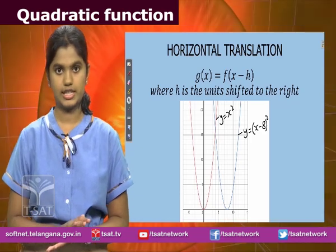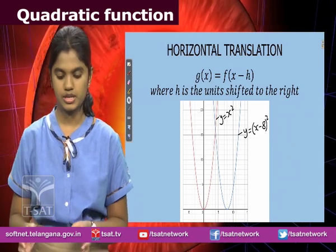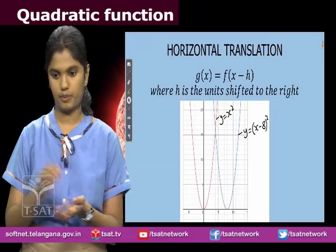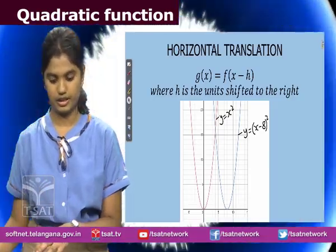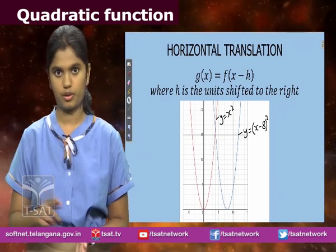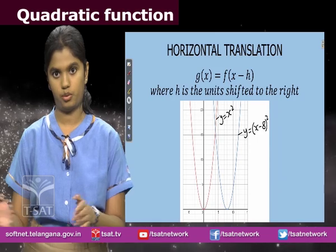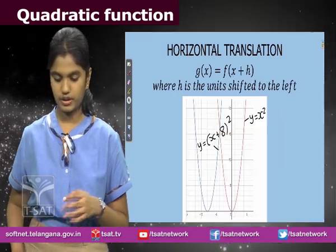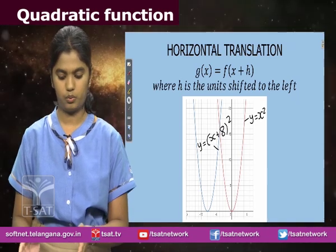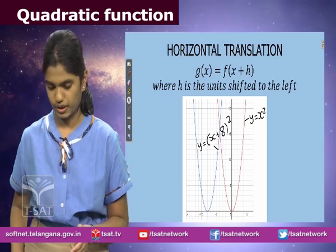Horizontal translation occurs when you move the graph to the right or left by certain units. To move it to the right, you use minus h, where h is the number of units moved right — so shifting right by 8 units gives y = (x − 8)². When moving to the left, it's plus h, which means it becomes y = (x + 8)².